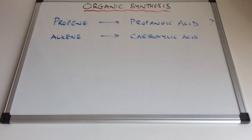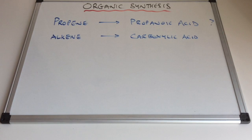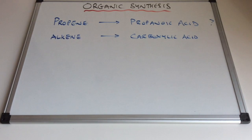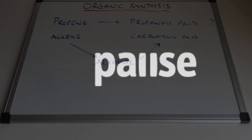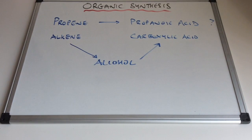The functional groups involved are: propene is an alkene and propanoic acid is a carboxylic acid. The first thing you've got to ask is can you convert an alkene into a carboxylic acid by one step or by a sequence of steps? Unfortunately there is no direct route from alkene to carboxylic acid, but you can go via an alcohol — that's the route we're going to take.